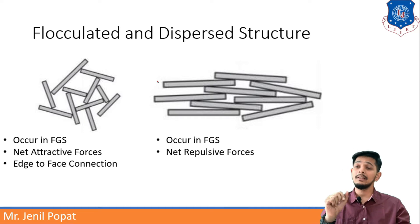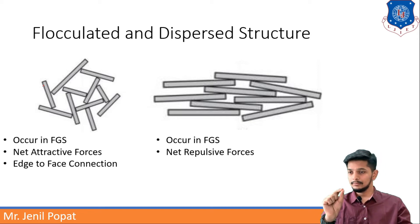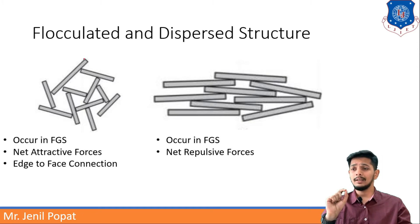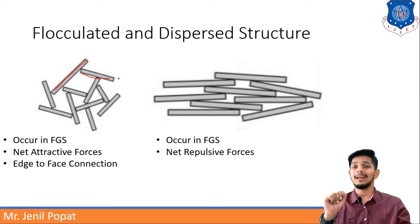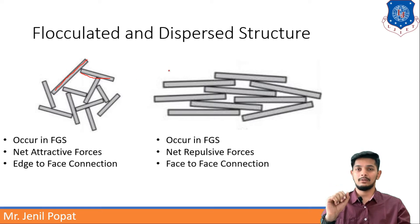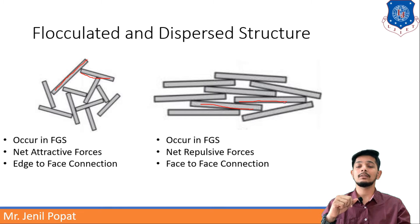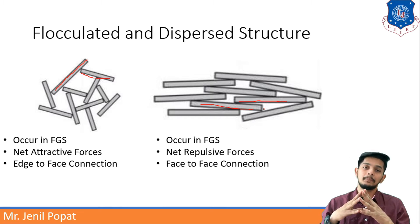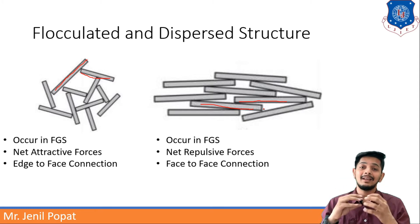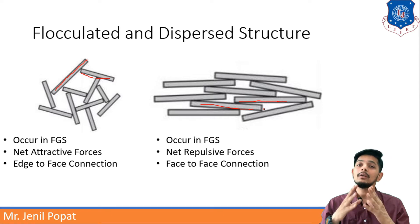In flocculated structures, edge-to-face orientation can be seen. In this image we can see edge-to-face connection. Here, this is a face of the particle and this is the edge of a particle, so edge to face are connected. Whereas in dispersed structure, face-to-face connection is there — one face and another face are joined together. Both are repulsive but due to compression they are attracted to each other, and that is how dispersed structure is created.